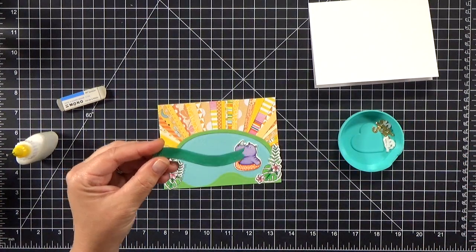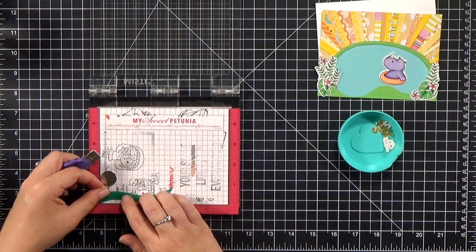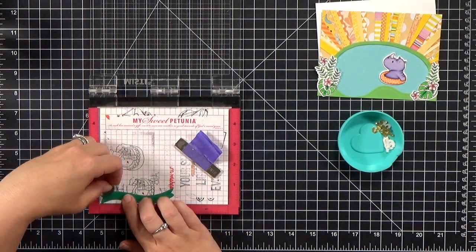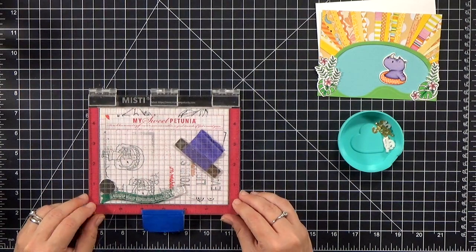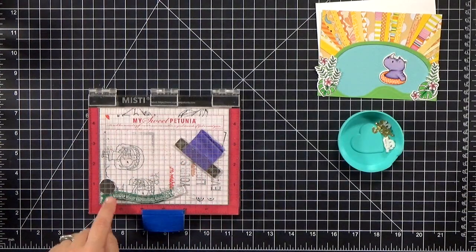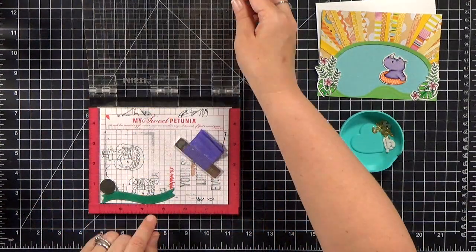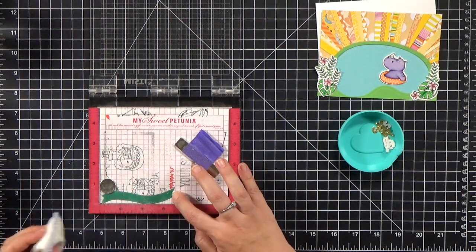Now before I glue down the rest, I need to get my sentiment stamped. And I have taken a stamp already from that same Sunshine and Friendship stamp set. And I've kind of curved it onto my MISTI. It says, Hope Your Birthday is a Splash. I am only going to stamp, Hope Your Birthday is A. And then we'll use Splash with the die-cut letters.